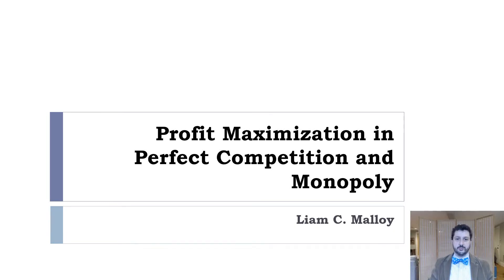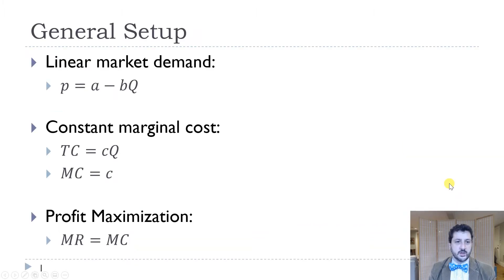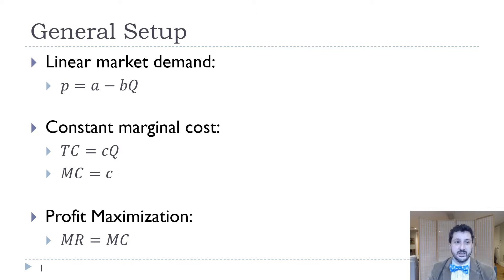In this video, we are going to compare the profit maximization decision in perfect competition versus monopoly — the two extremes in microeconomics and industrial organization. Our general setup is going to be the same for both: we're going to have the same market demand curve. Market demand slopes down, and in our linear inverse demand curve, we have P on the vertical axis: P equals A minus BQ, where A is the vertical intercept and minus B is the slope.